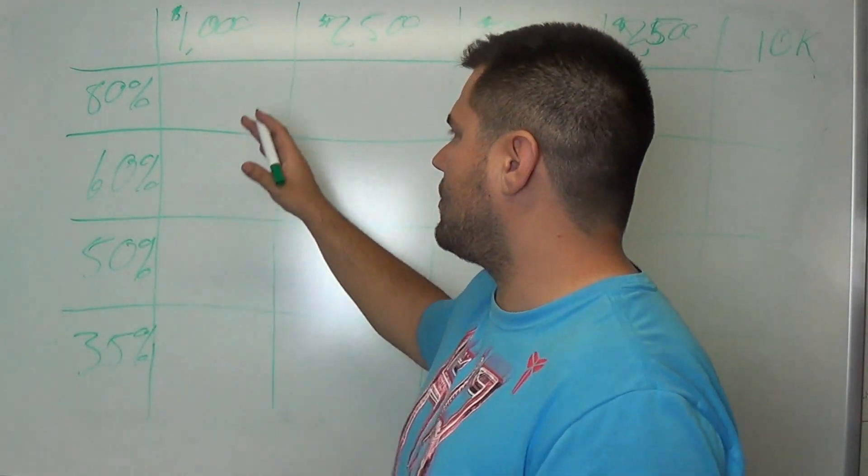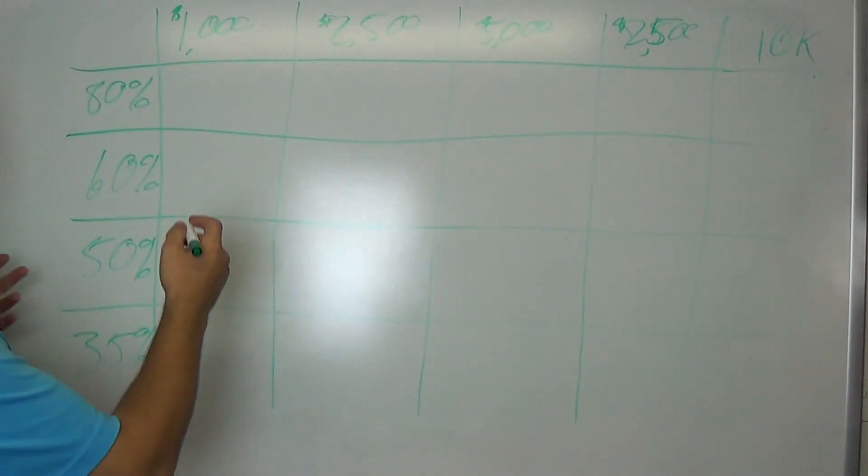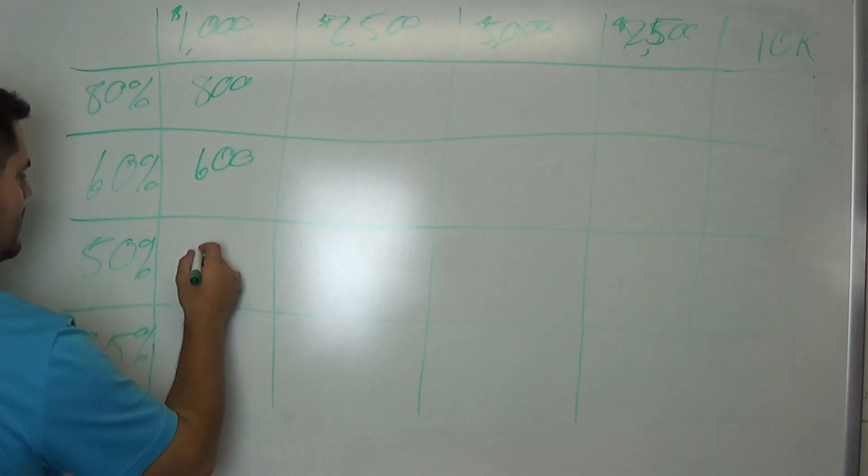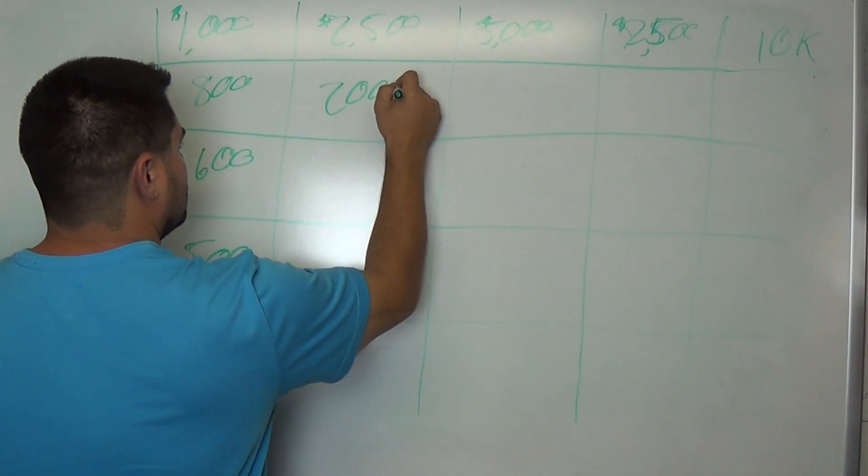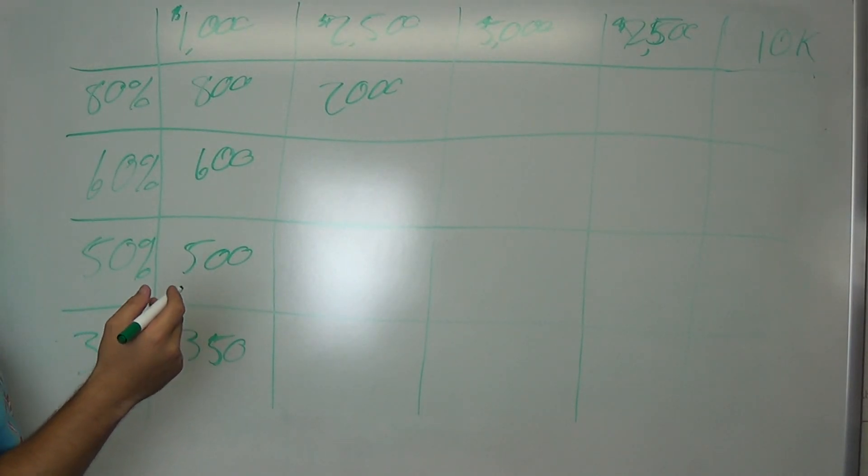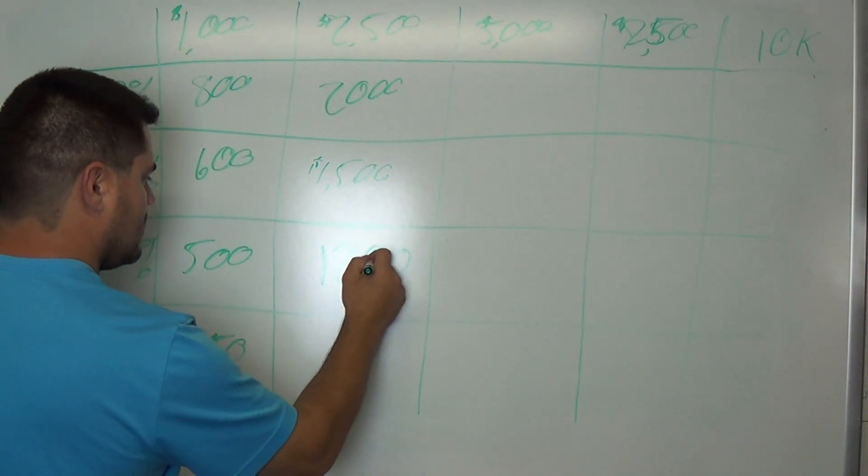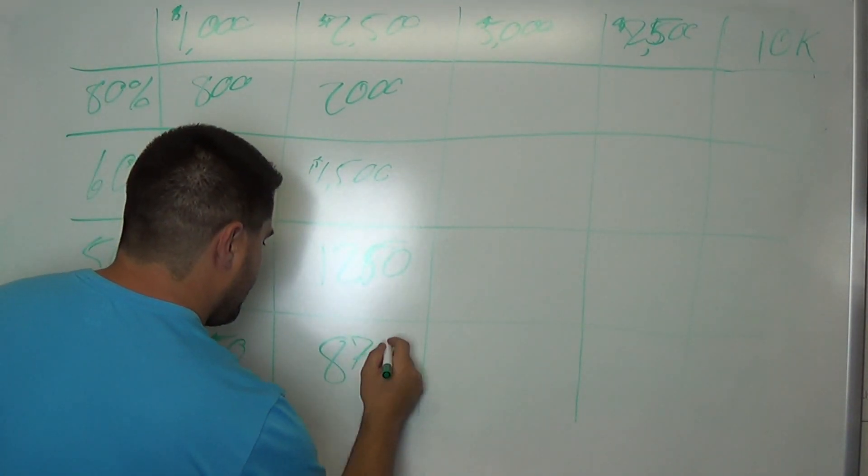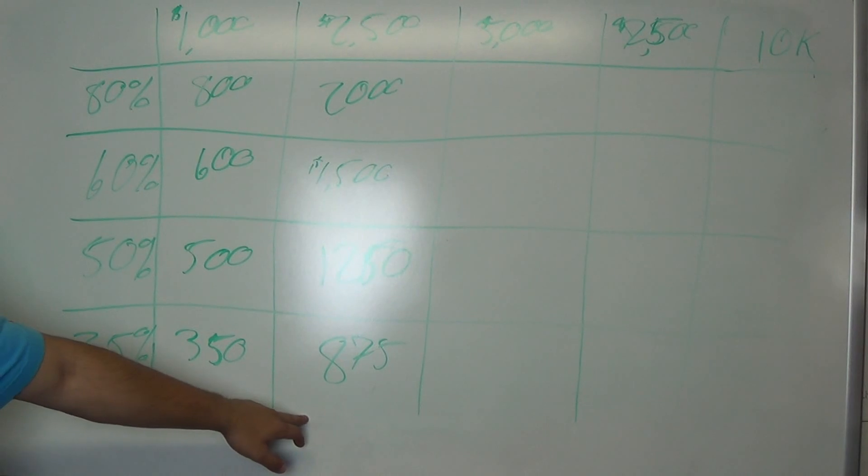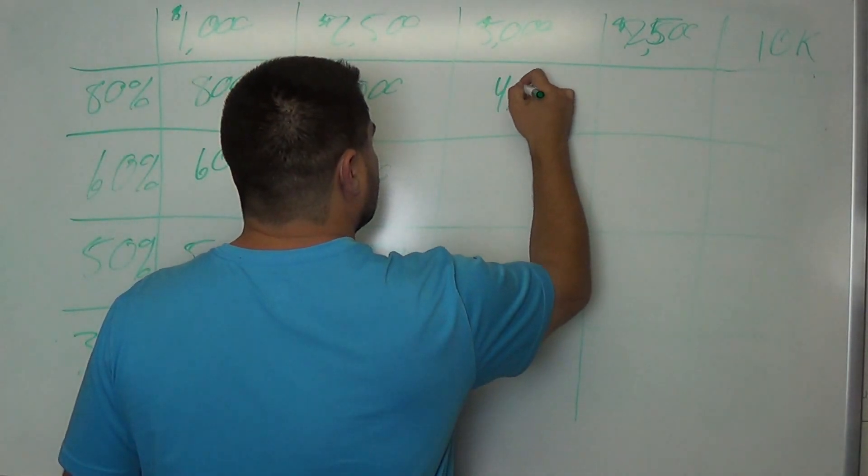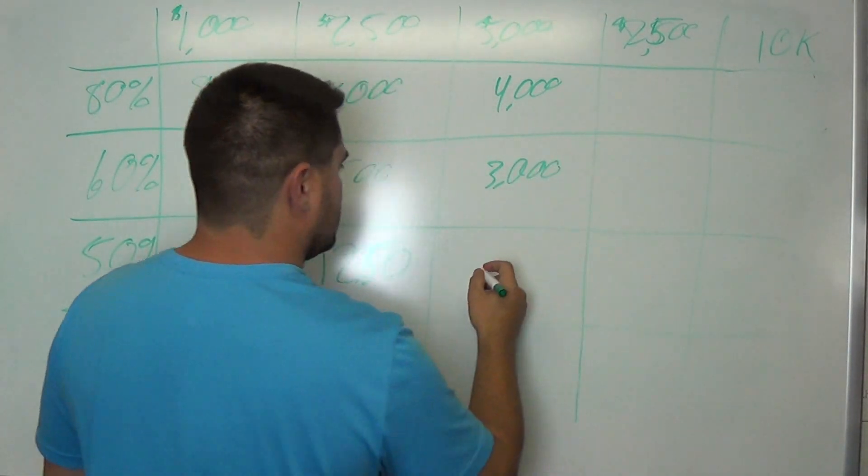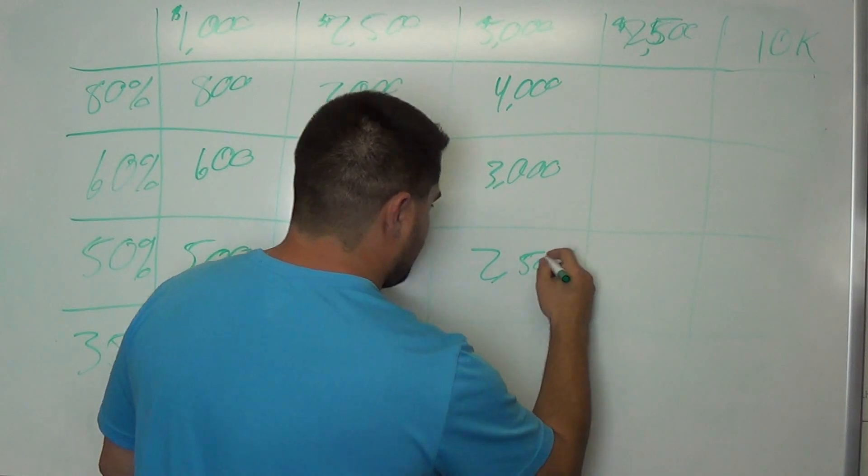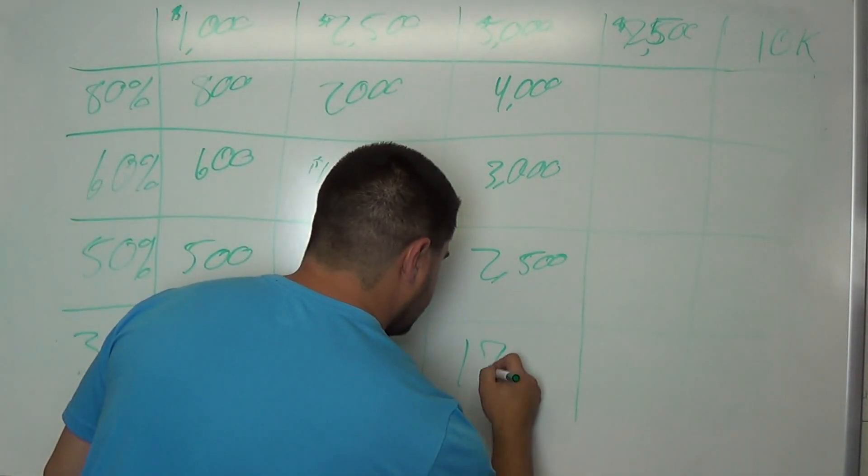So let me write down the numbers, how much you need to make, and this is going to explain everything. So this is 800, 600, 500, 350. This is 2,000. This is 1,500. This one is 1,250. And this one is 875. This bottom one is always going to be very small. Just keep that in mind. 4,000. 3,000. 2,500. And this small one is 1,750.